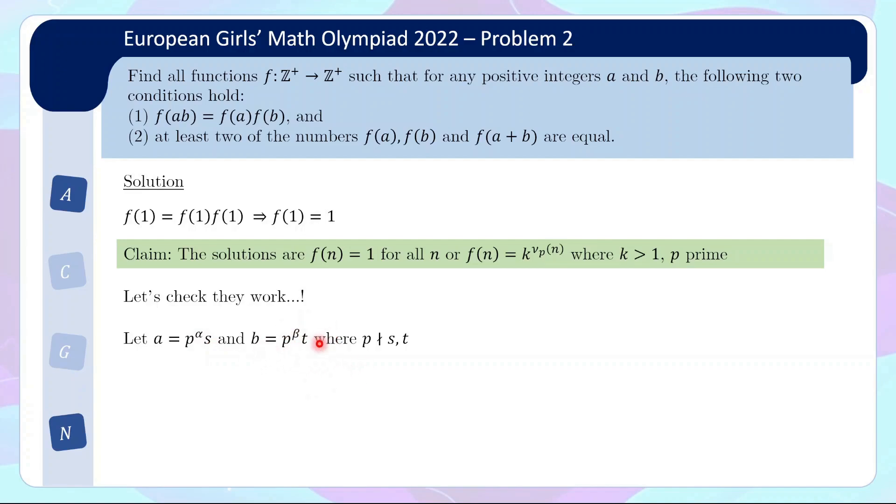I mean, you just let a and b be the prime power times something that is not divisible by the prime. Let a equal p to the alpha times s, where s is not divisible by p. b similarly, p to the beta times t, where t is not divisible by the prime. Then you see what happens. ab is basically p to the power of alpha plus beta times st. st is not divisible by the prime, so f(ab) is indeed f(a) times f(b). Namely, they are both equal to k to the power of alpha plus beta.